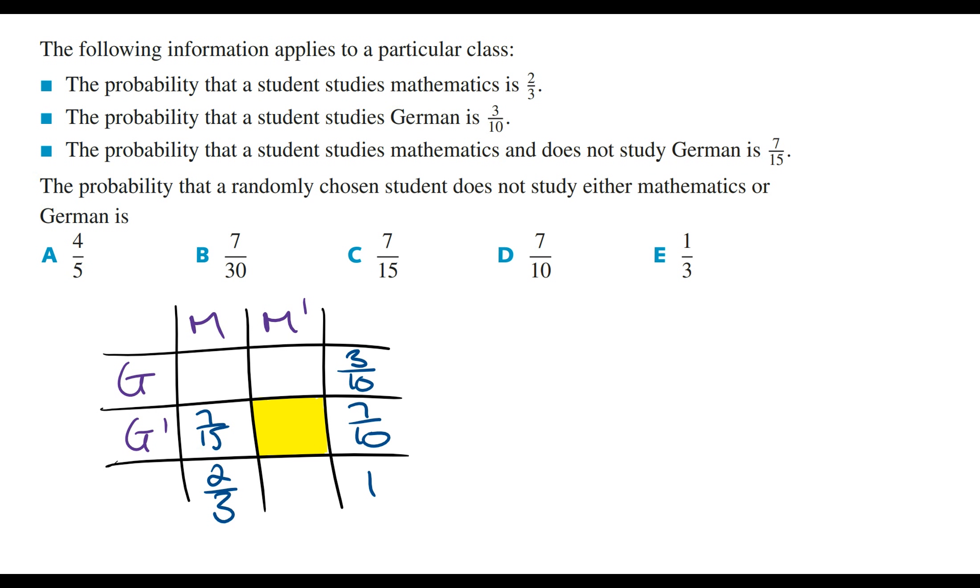The sum of this third row has to equal 7 on 10. And so this means that the probability that the student does not study maths and does not study German is going to equal 7 on 10 minus 7 on 15. We can rewrite this as 21 on 30 minus 14 on 30...